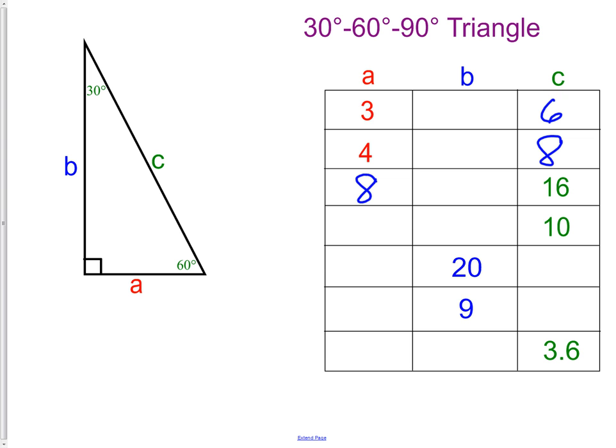On the next one, we have the hypotenuse is 10, which makes the short leg 5. If you think of it this way, A is n, B is n root 3, and C is 2n.